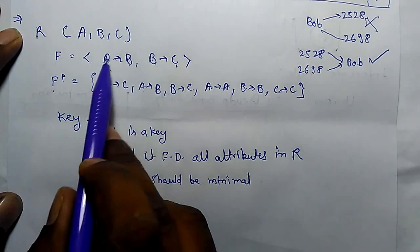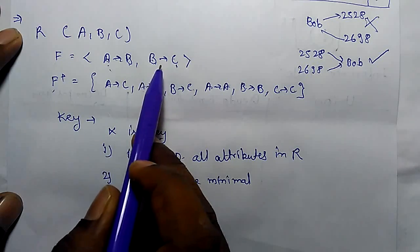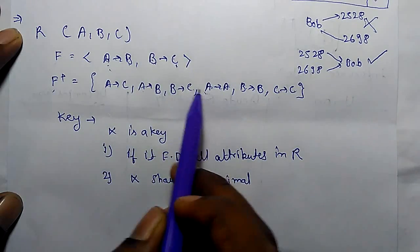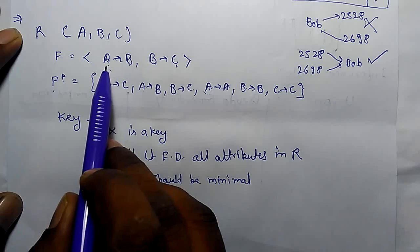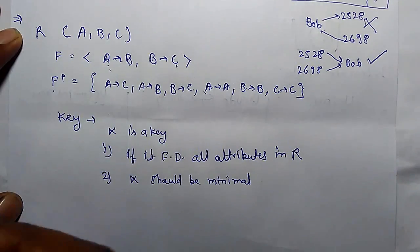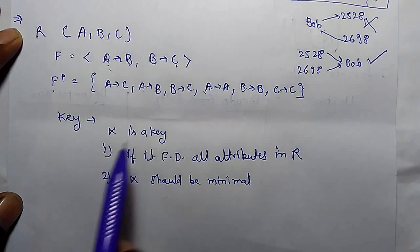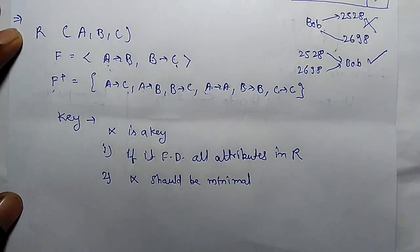Here only three attributes are there, that's why we can find it. But if there are more than 5 or 10 attributes in a particular database, it is very difficult to find f-closure.